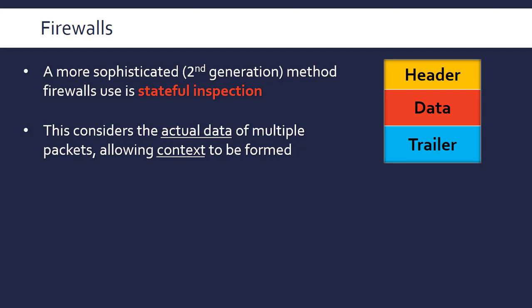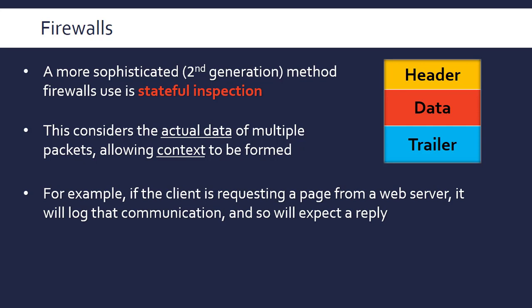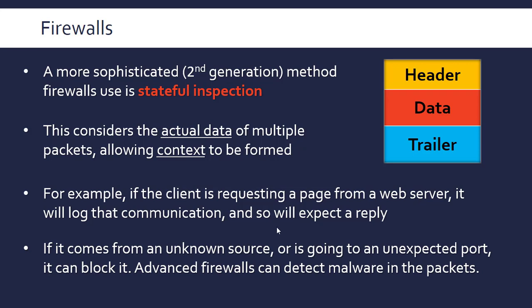By looking at multiple packets being received or sent, the firewall will need some memory and a better processor. For example, when a client requests a web page, you expect a reply — the firewall may analyze the outgoing request packets and then expect a corresponding reply. If a reply comes from an unknown source — different from the server we requested from — it can be blocked. Also, HTTP uses port 80, so if traffic isn't going to port 80 that's suspicious and you might want to block it.